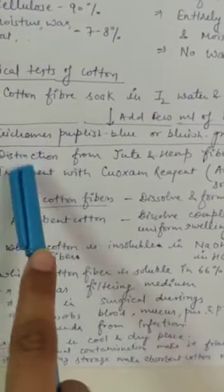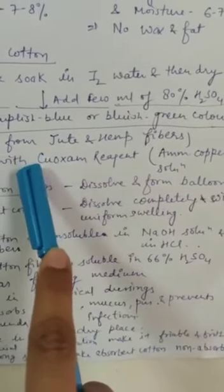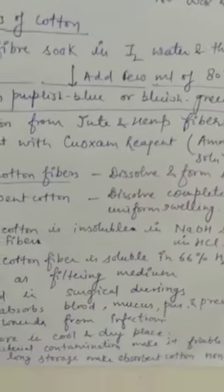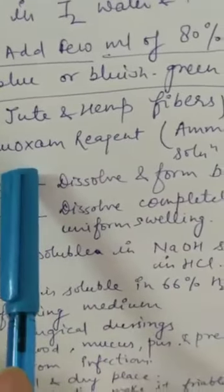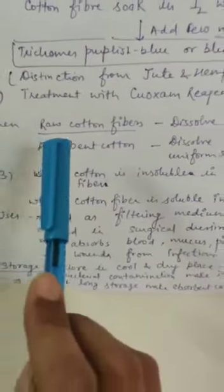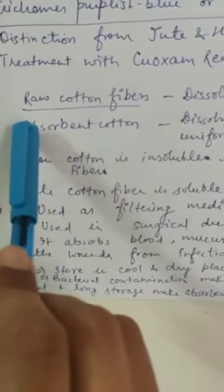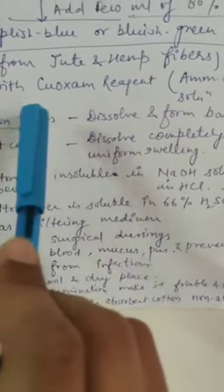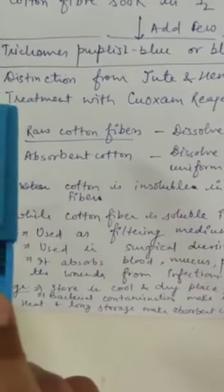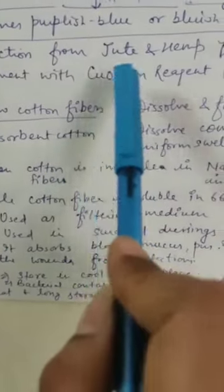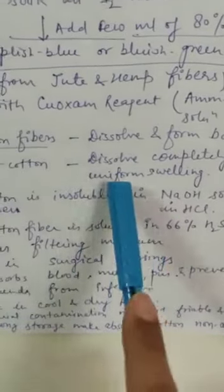Second test: treatment with Cuoxam reagent, which is ammoniacal copper oxide solution. When this reagent is treated with raw cotton fiber, cotton fibers are dissolved. For absorbent cotton, when we treat it with Cuoxam reagent, there is complete dissolution and the swelling is uniform.